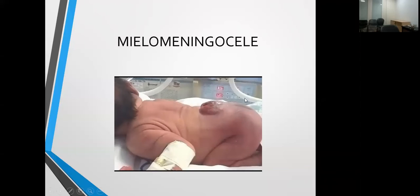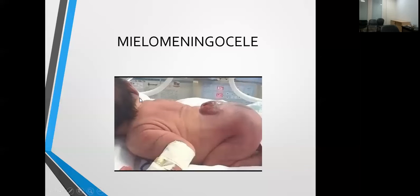Vean el mielomeningocele: se conocen sus características —aquí está la médula, la placoda, el sistema nervioso que está expuesto. Alrededor está el líquido cefalorraquídeo alterado. Se piensa que por esta liberación de fuerzas, todo lo que es la fosa posterior se altera. El mielomeningocele junto con todas las malformaciones ya vistas en la resonancia magnética nos da por definición lo que es el Chiari tipo 2.